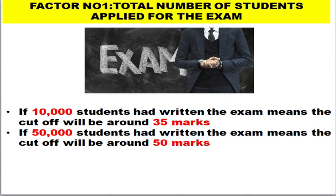The first factor is the total number of students who applied for the examination. If there are 10,000 students who wrote that particular exam, the cutoff will be around 35 marks. But if only 50 students wrote it the next year, the cutoff will be around 15 marks. The lesser the number of students, the lesser the cutoff; the greater the number of students, the greater the cutoff.